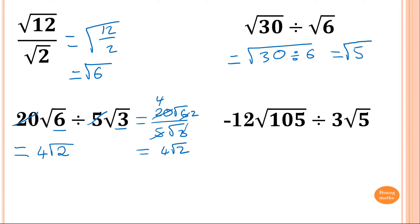This one here. Same thing applies. A negative divided by positive, of course, is a negative. 12 divided by 3 is 4. Then you go 105 divided by 5. 5 goes into 10 twice, 5 goes into 5 once.